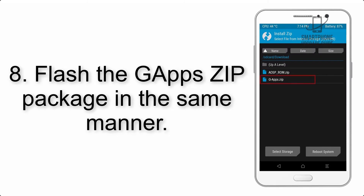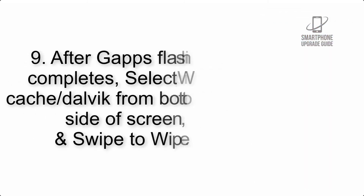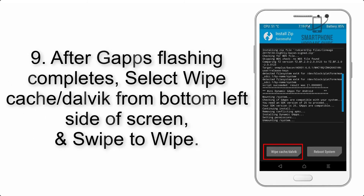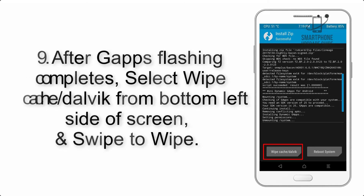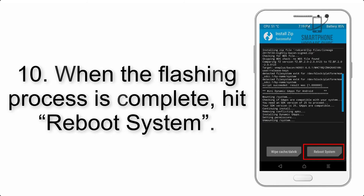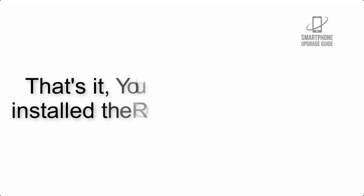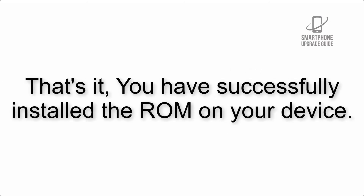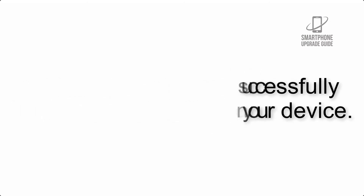Step 8: Flash the GApps zip package in the same manner. Step 9: After GApps flashing completes, select Wipe Cache and Dalvik from the bottom left side of the screen and swipe to wipe. Step 10: When the flashing process is complete, hit Reboot System. That's it — you have successfully installed the ROM on your device.